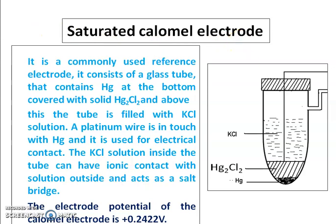What is a saturated Calomel electrode? Looking at the diagram, we see a glass tube with mercury at the bottom, above which is solid mercurous chloride (Hg₂Cl₂). A platinum wire maintains electrical contact and is connected to the mercury. Above the mercurous chloride is KCl solution, which ensures ionic contact with the outside solution through a pinch. The electrode potential of this Calomel electrode arrangement is +0.2422 volts.